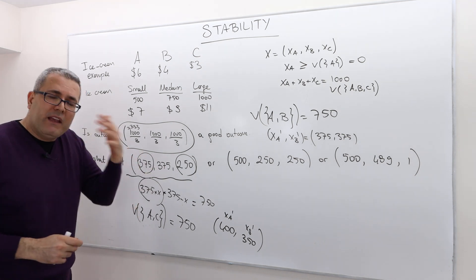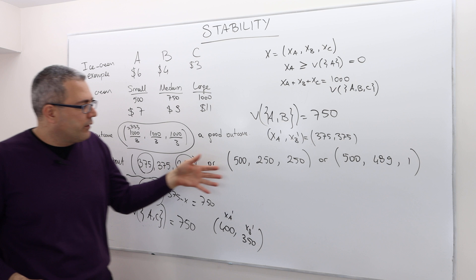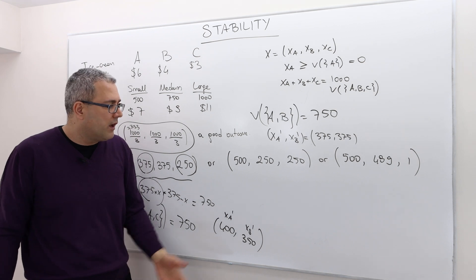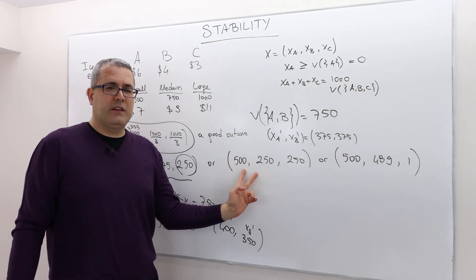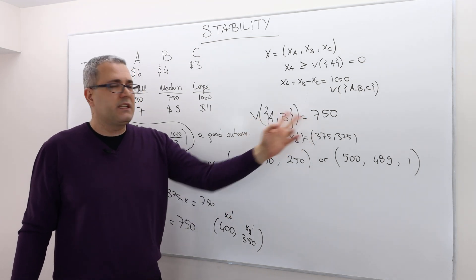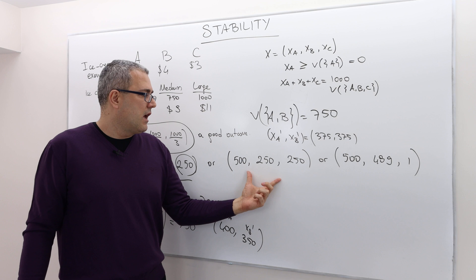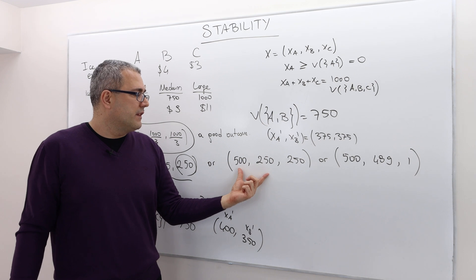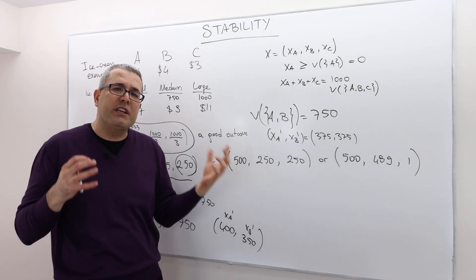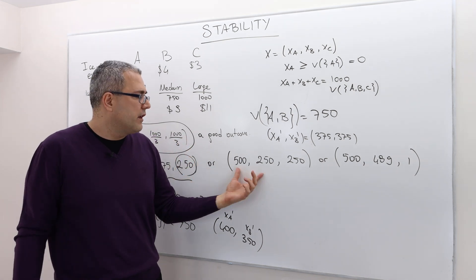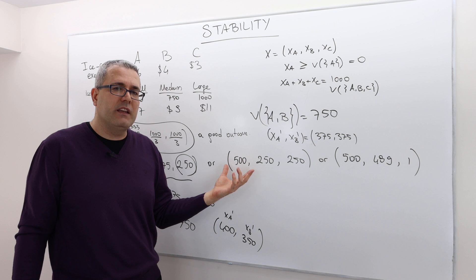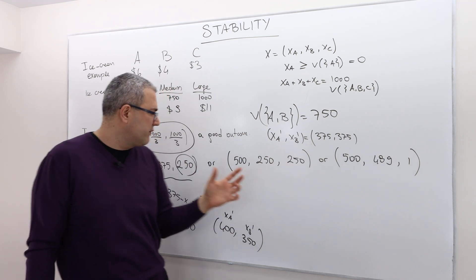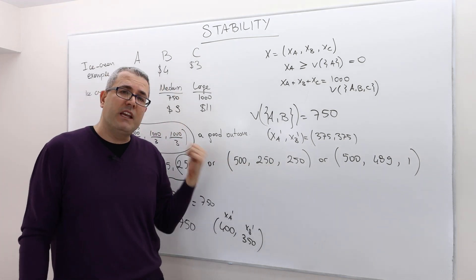All right. So, all right. You can basically iterate this way. And at some point you may end up something like this, 500, 250, 250. Is this a good outcome? Well, so if you look at B and C, it adds up to $500, which is the worth of this coalition. So they don't really have incentive to deviate. But however, what about agent A and B? If agent A and B gets together, form a coalition, their worth is 750. Same for agent A and C.